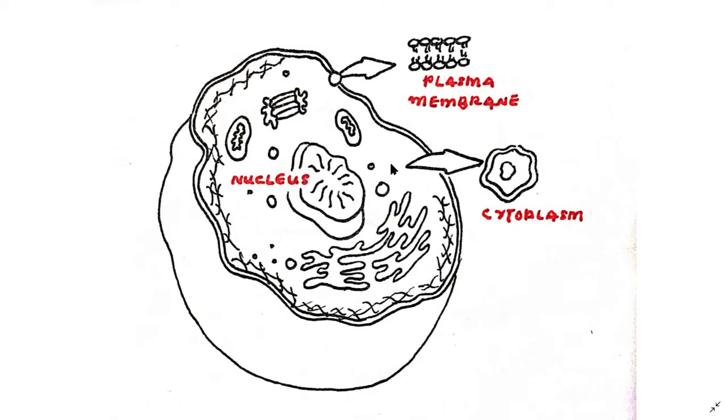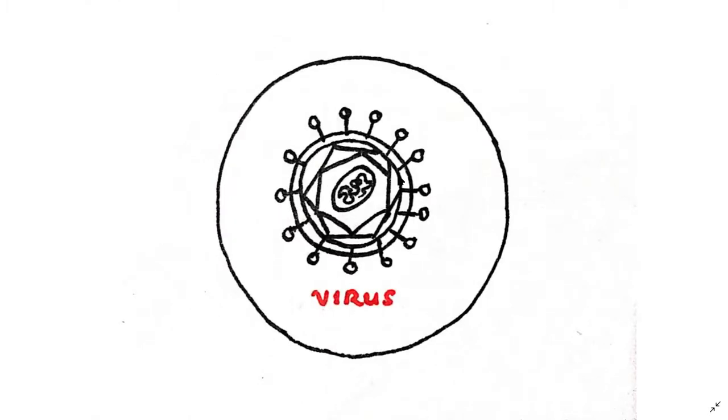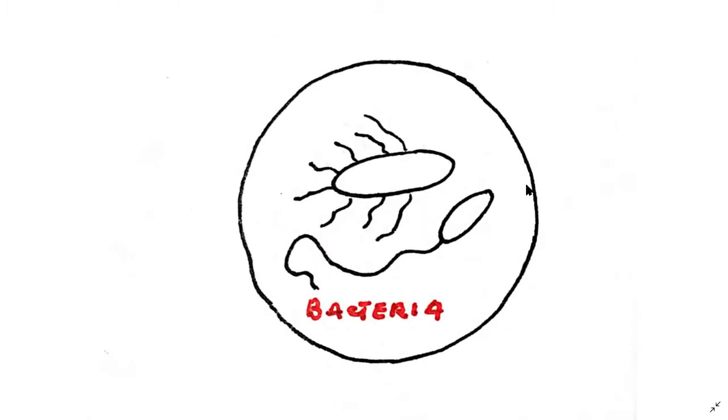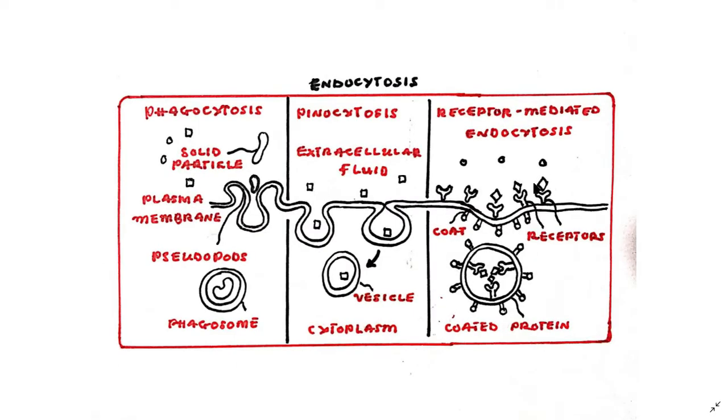But larger objects like viruses and bacteria are too large to transport through the plasma membrane. So cells would have to engulf these microbes and pull them in, which is generally called endocytosis. However, there are many different types of endocytosis and phagocytosis is one of them.